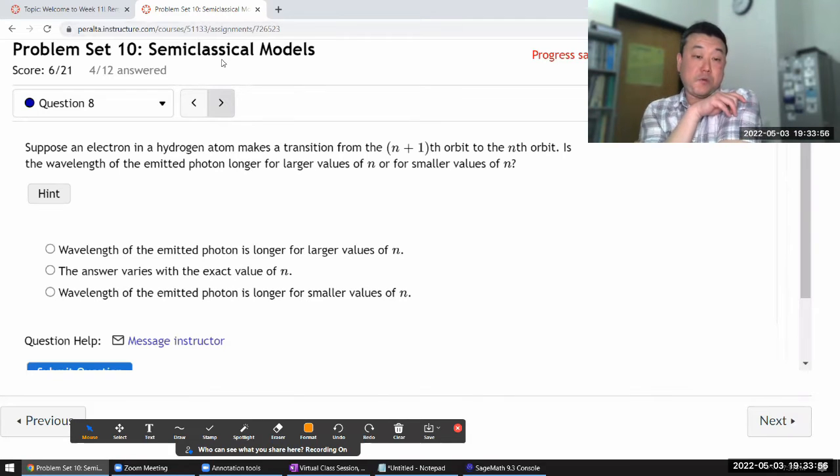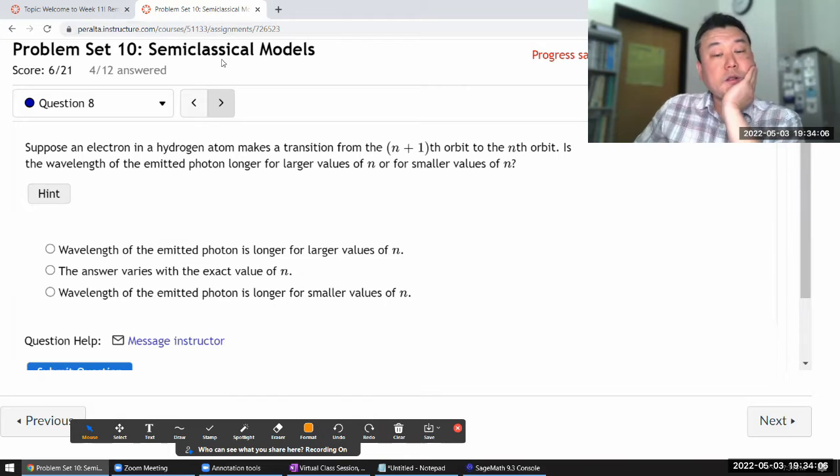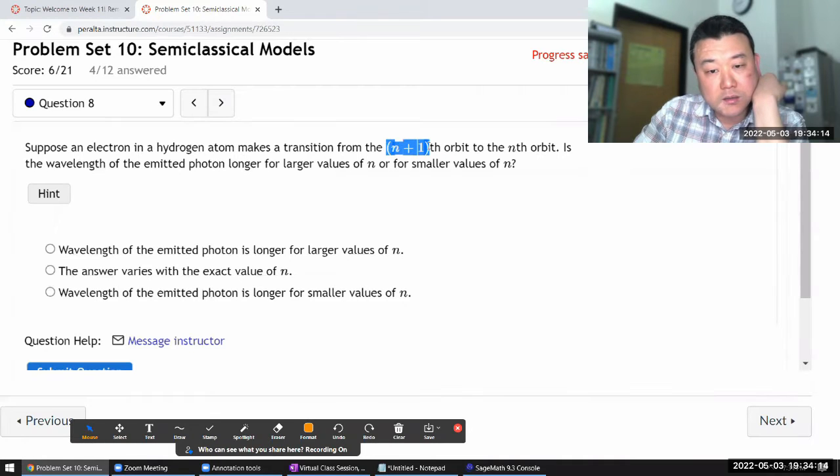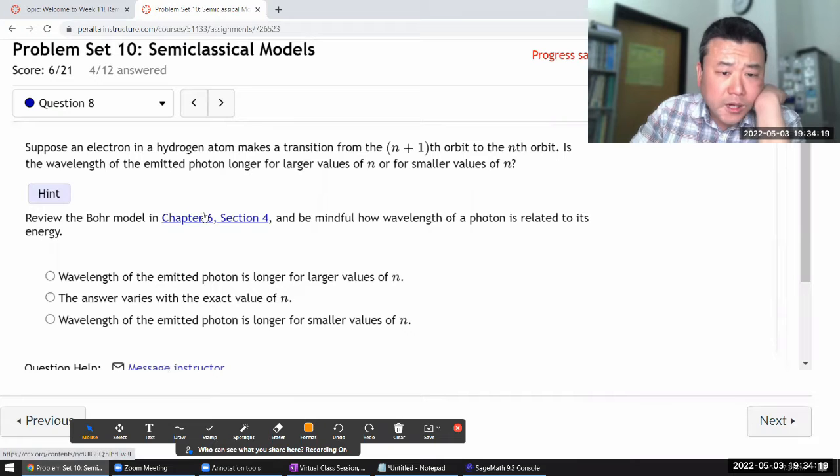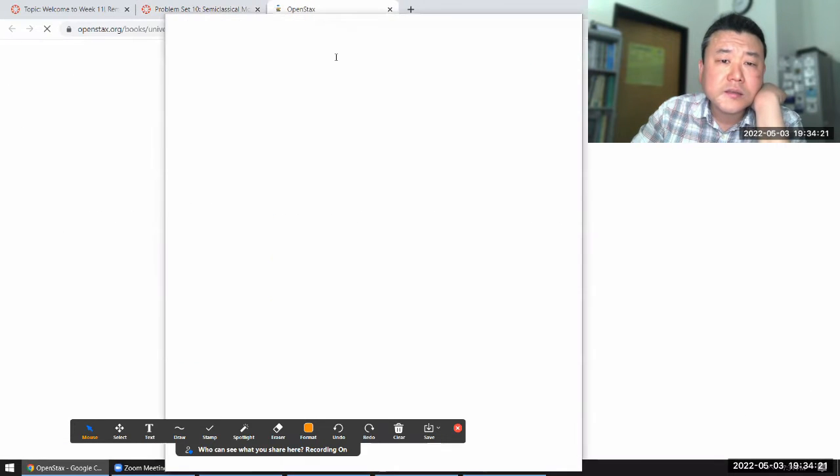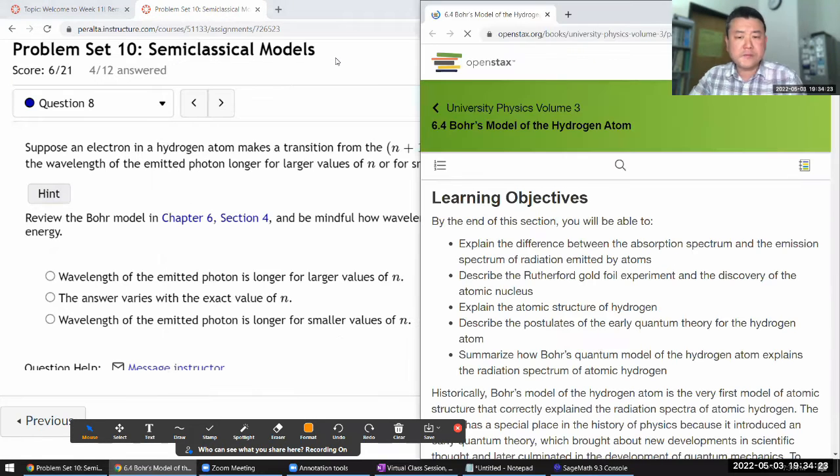It says, suppose an electron in a hydrogen atom makes this transition, is the wavelength of the emitted photon longer for larger values of n? So you can see that the way the question is stated, it's looking at the neighboring energy levels. And I believe there's a plot in the section that gives you a level diagram.